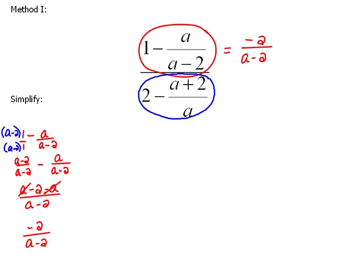Let's look at just this denominator. And again, I'm going to do this out sort of to the side. So it'll be two minus a plus two all over a. And here again, if you need to see this two as a fraction, go ahead and put it over one. Now, between one and a, we need a common denominator, which in this case would be a.